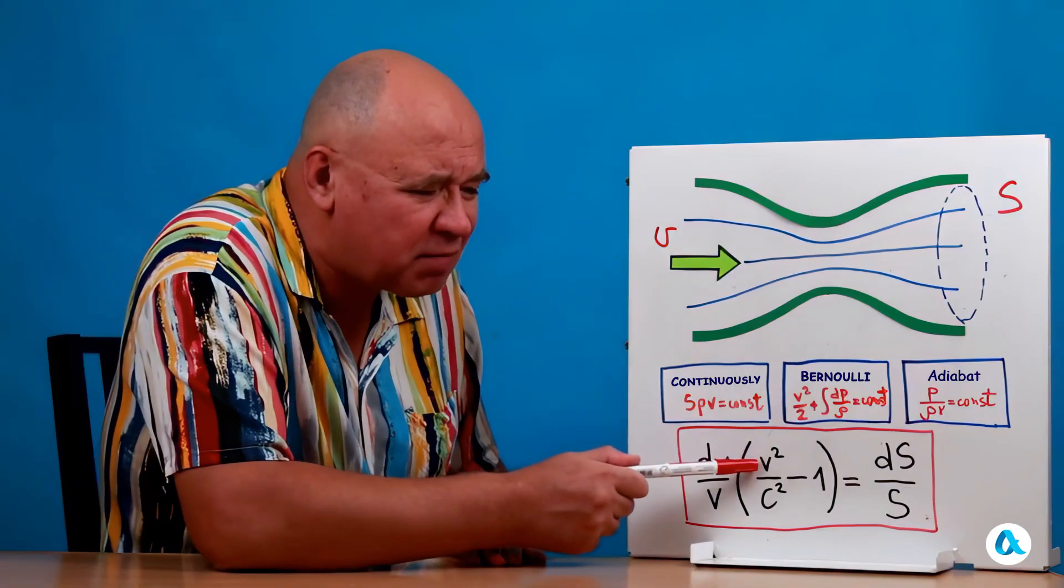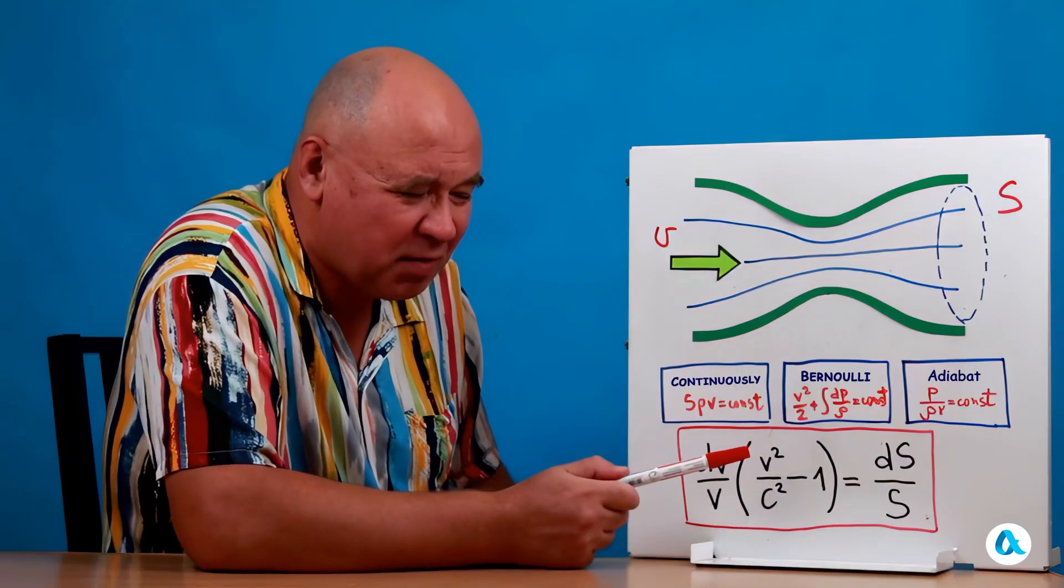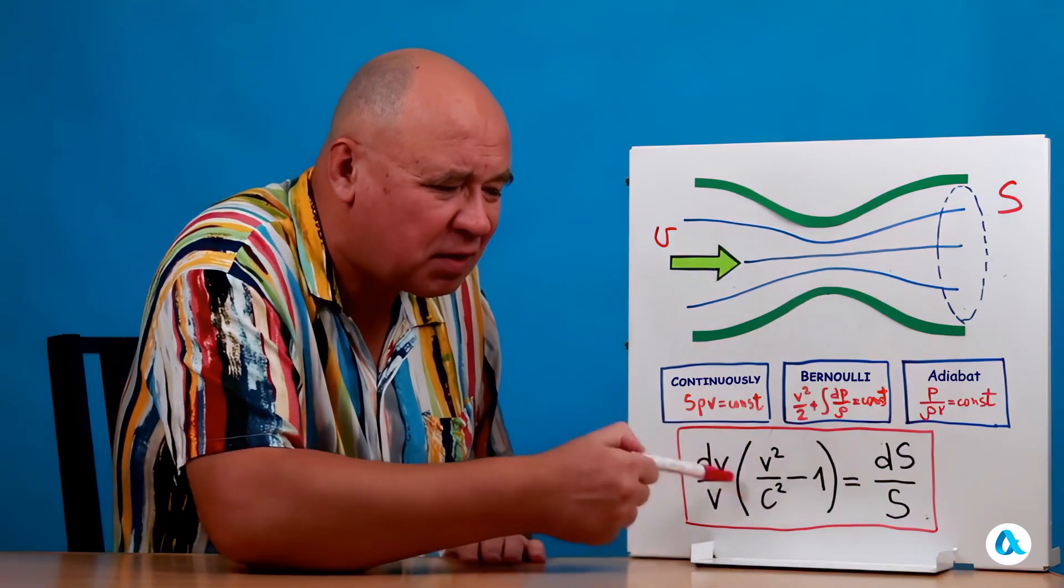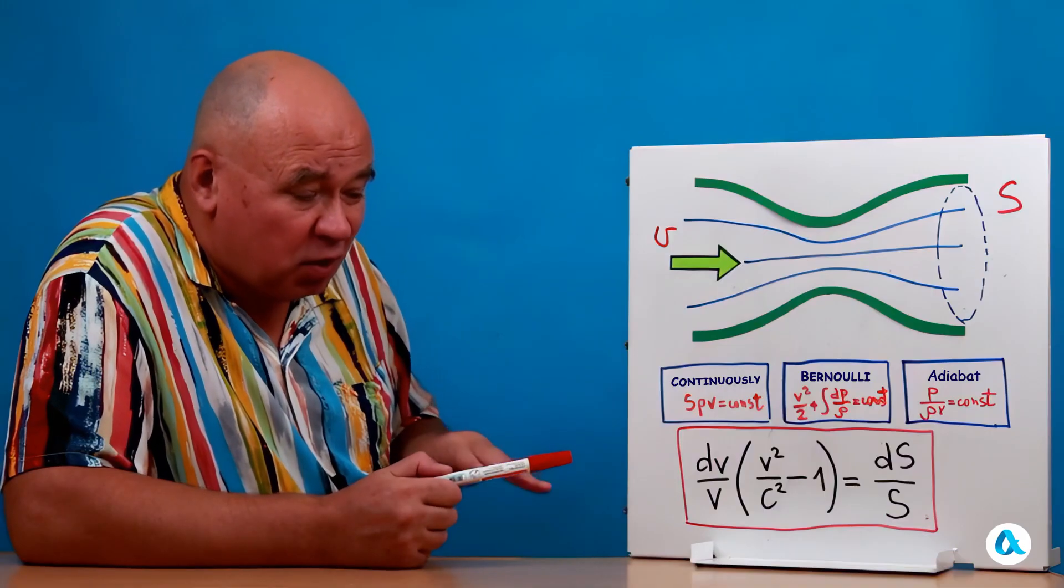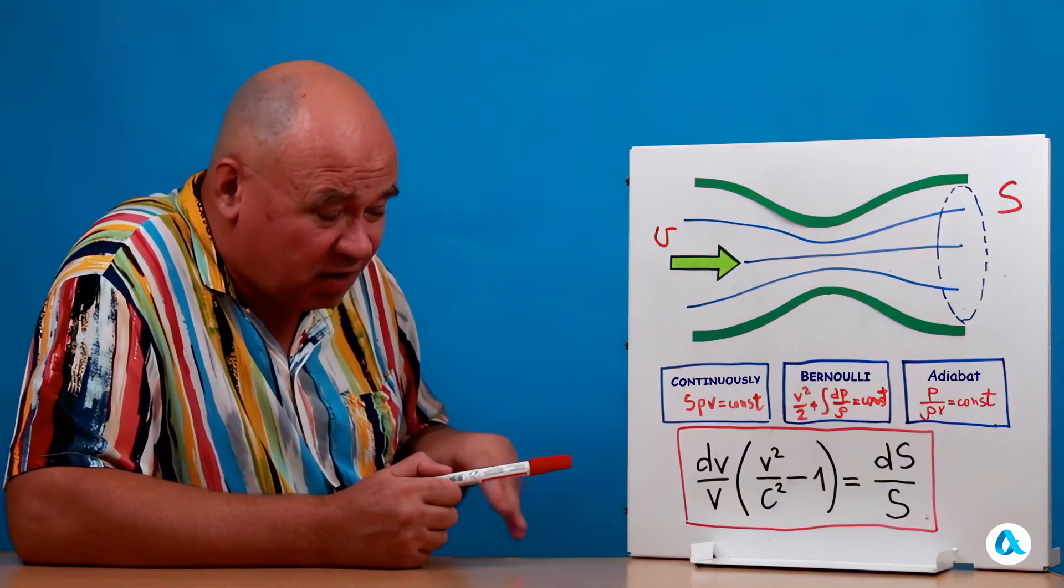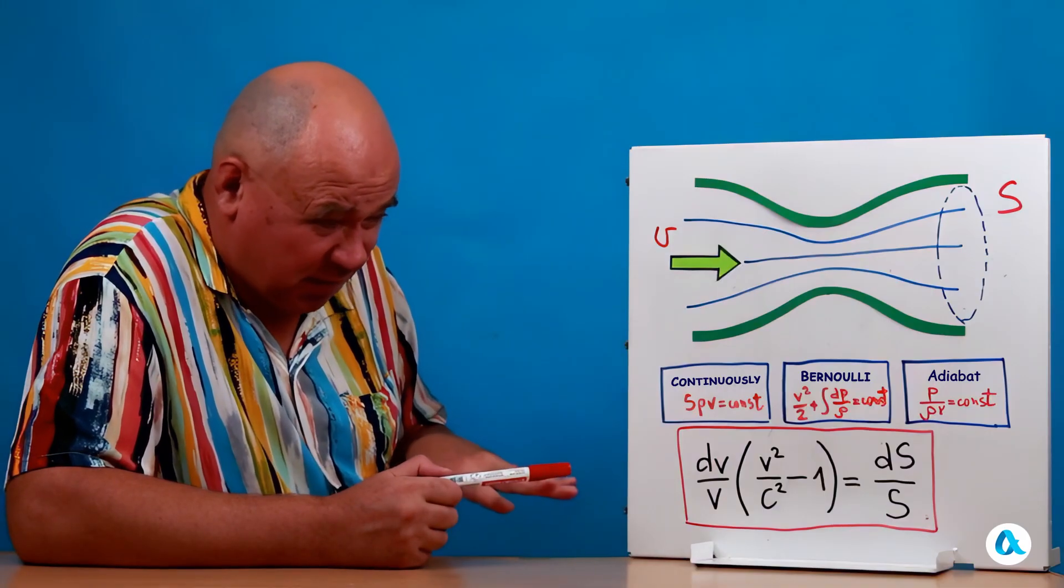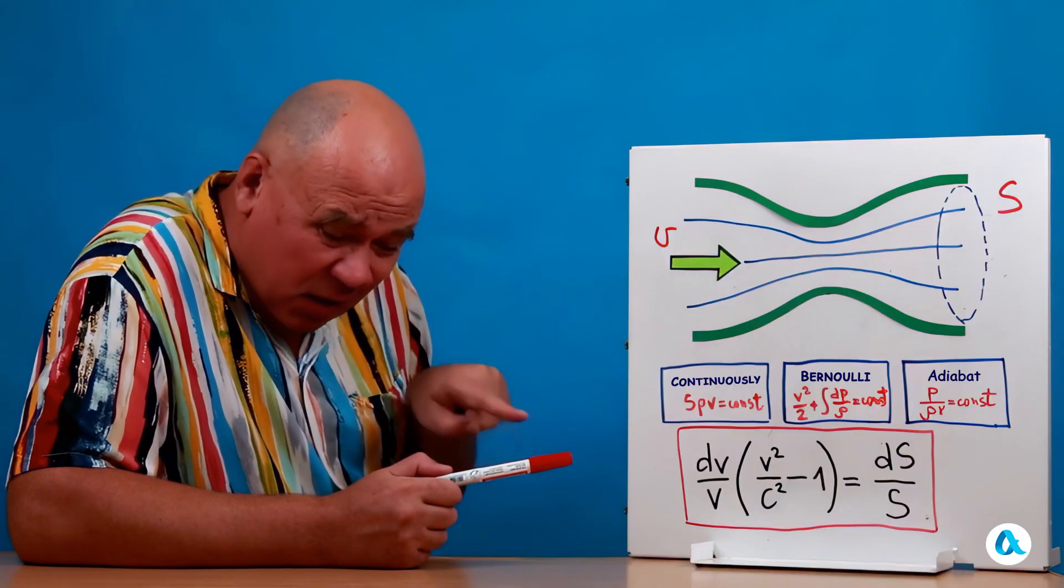When the velocity equals the speed of sound, this is interesting. This term becomes zero. That is, no matter how the cross-section changes, the flow velocity will not change locally at this point.